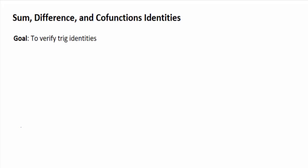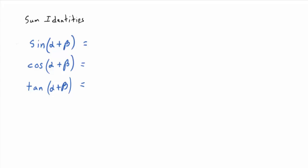Sum, difference, and co-function identities. The goal is to verify trig identities ultimately, but we're going to do other things along the way. So the sum identities are what we're talking about here. We've got three of them that you need to memorize: the sine of alpha plus beta, the cosine of alpha plus beta, and the tangent of alpha plus beta. Do you have to memorize these? Absolutely — they're the ones that come up all the time in pre-calculus and calculus. We know that the sine of alpha plus beta is not equal to the sine of alpha plus the sine of beta.